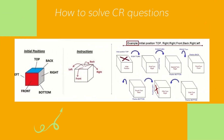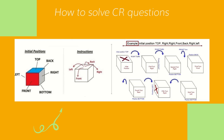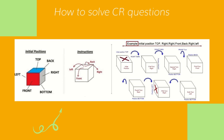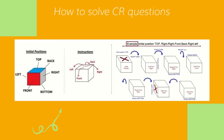First, you are told the initial position of the marked surface on the cube — for example, initial position: top. Then a series of rotation instructions are given and you are asked to rotate the cube imaginarily, keeping the initial position in mind. When the instructions are finished, you are asked to identify the final position of the marked surface.